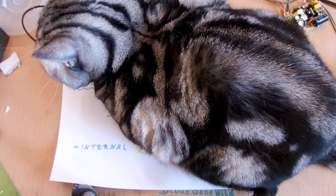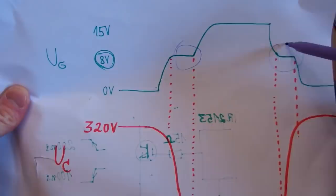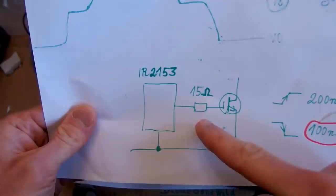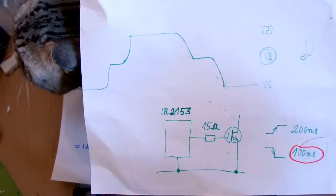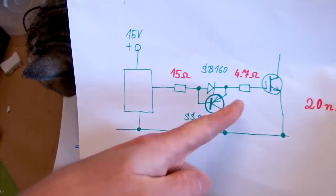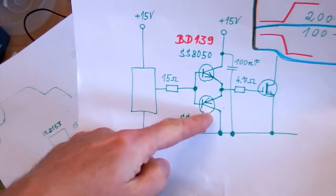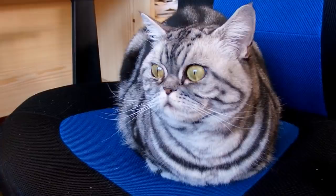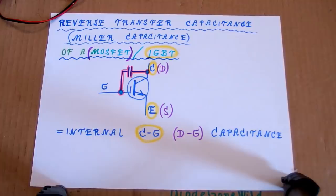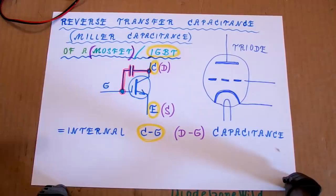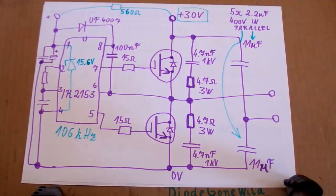The Miller effect, caused by the Miller capacitance of the transistors, can be seen in switching transistors as this plateau region. The Miller effect doesn't only happen in transistors — it also happens in vacuum tubes. It was already discovered in vacuum tubes about 100 years ago and is named after the person who discovered it. In vacuum tubes there is also a capacitance from the anode to the grid, so they also experience the Miller effect.